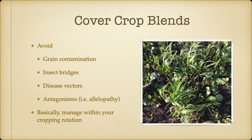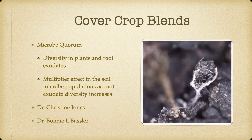Basically with cover crop blends, we're managing the cover crops within our cropping rotation. One of the really neat things coming out of the research is something called the microbe quorum, through Dr. Christine Jones and Dr. Bonnie Basler. What they're finding is this diversity in plants and root exudates — when we have two or three species growing together, we see a synergistic bump in production in most cases.